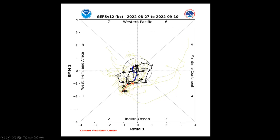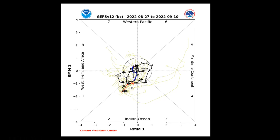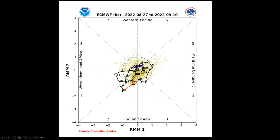Here is the GFS Ensemble. I always like to start broad with global patterns and then dig deeper. Looking at the MJO, over the next couple of days it's going into phase two. After that it gets a little wild, as the members are not sure what the MJO will be doing. But certainly we are going to get into phase two as we close out August and enter the beginning of September. The European model shows less amplitude in phase two before returning to the null phase over the next 10 to 15 days.